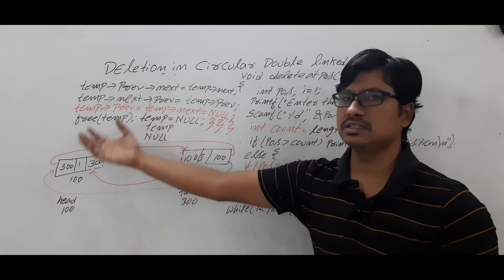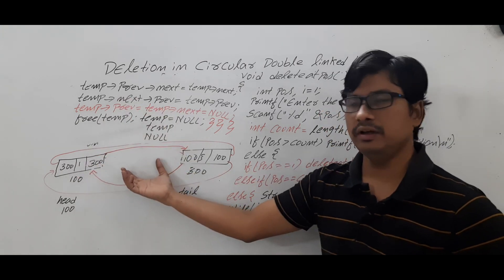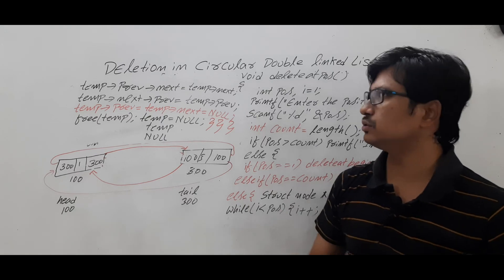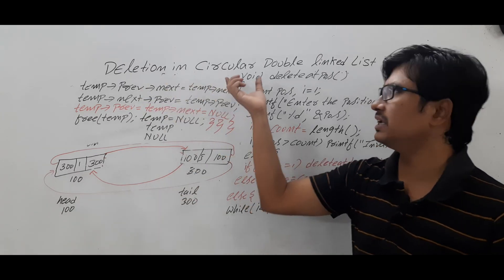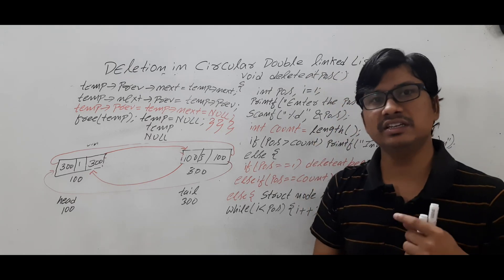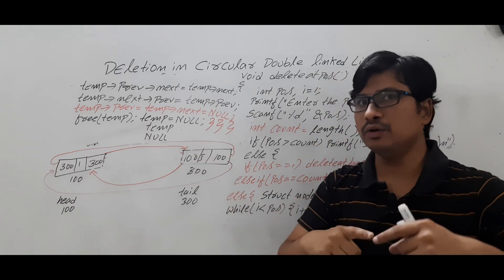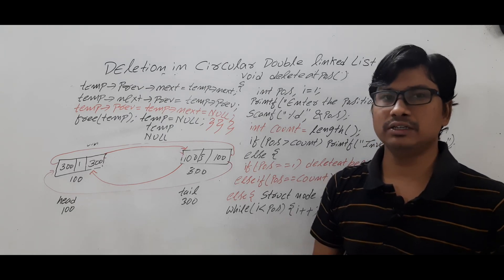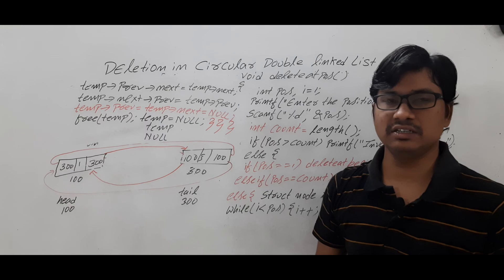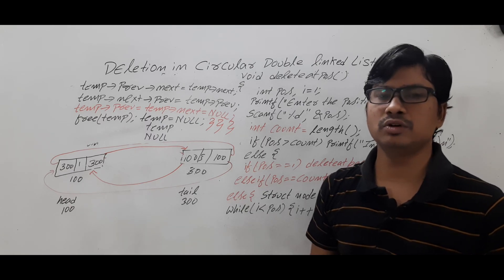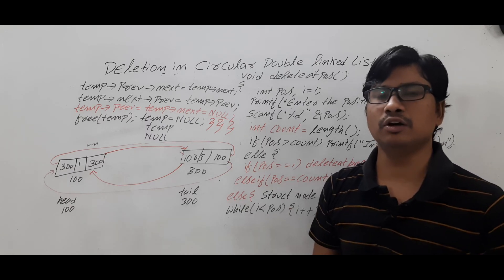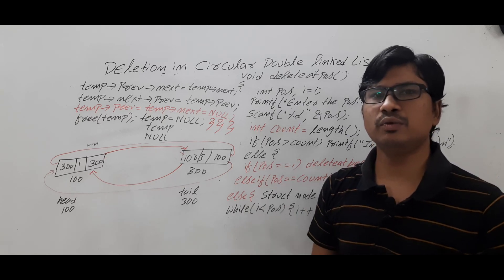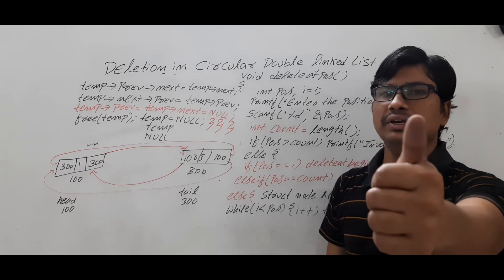I hope you have understood how to delete a node in a circular double linked list. We discussed three scenarios: deleting from the beginning, from the end, and from a specified position. If you have any doubts related to this concept, feel free to ask in the comment section. I will try to clear your doubts as early as possible. Thank you for watching the complete video — have a nice day.